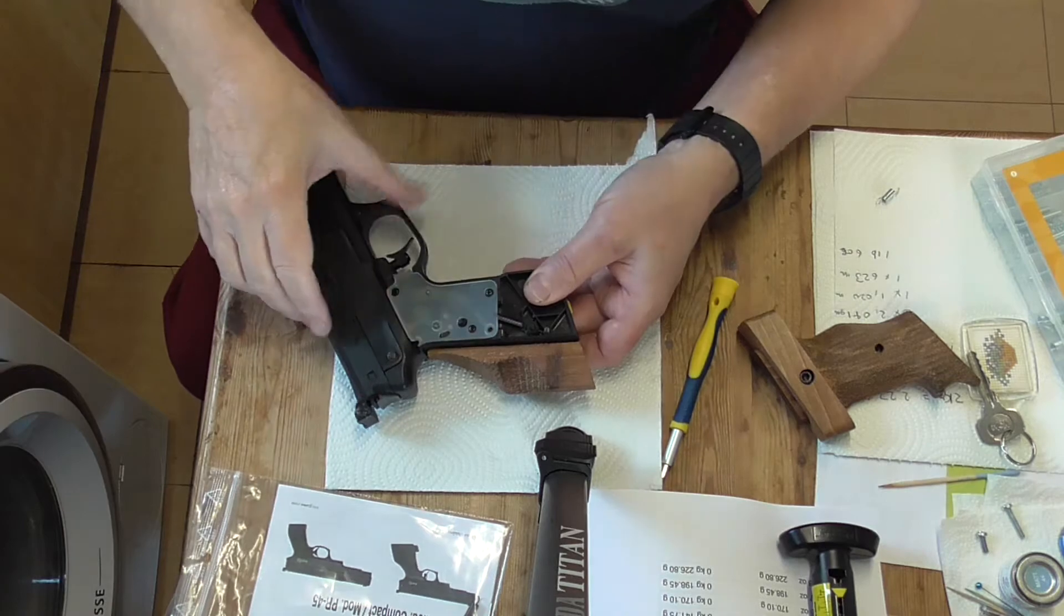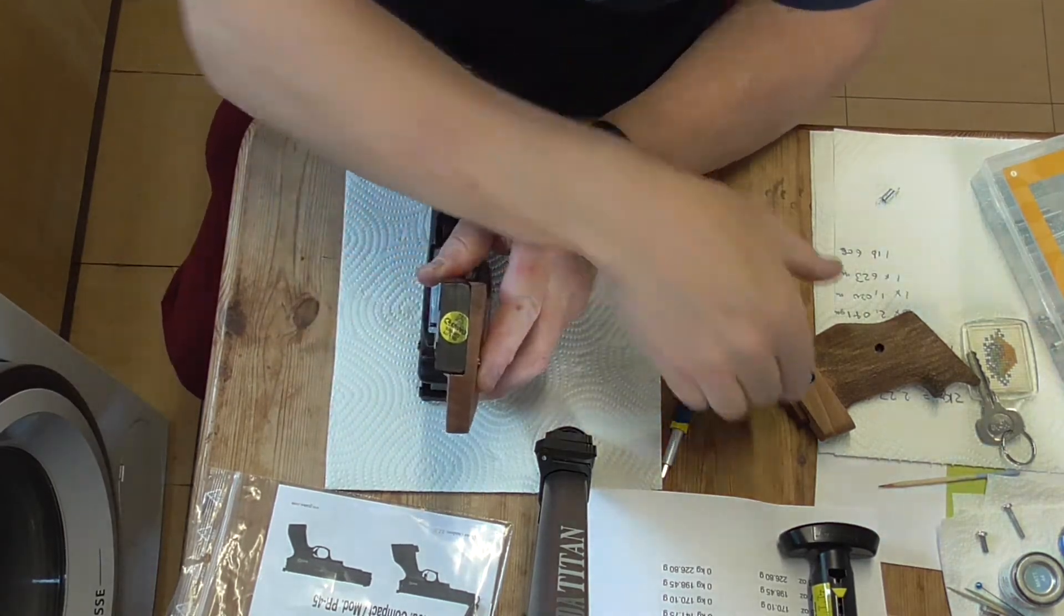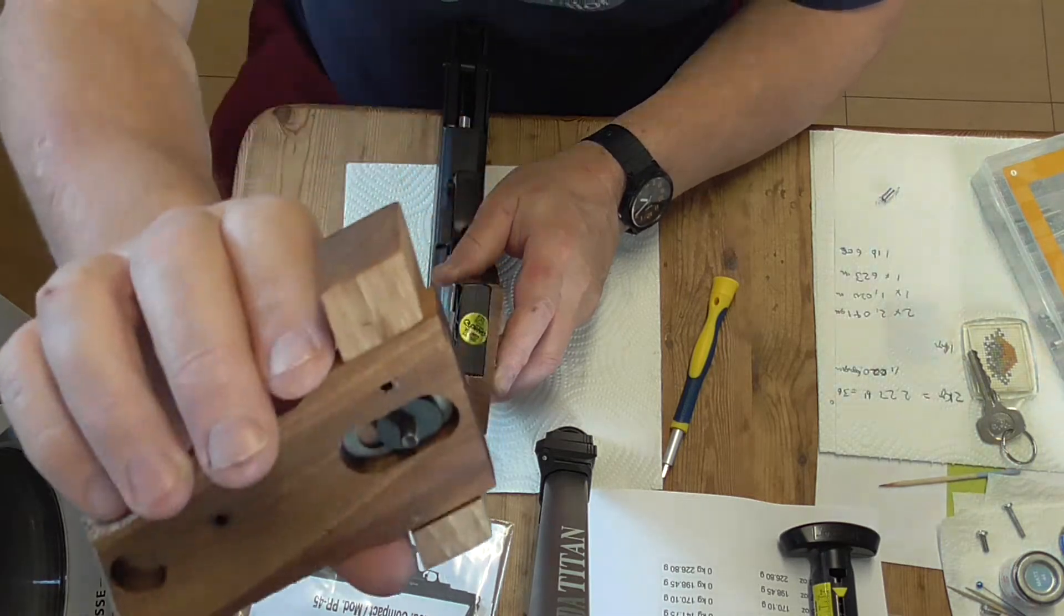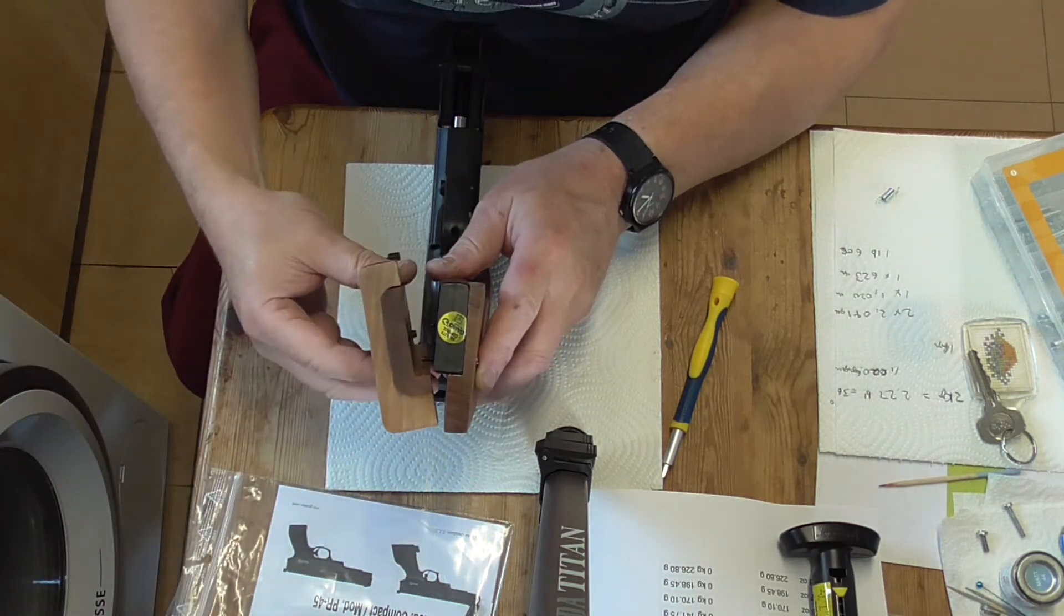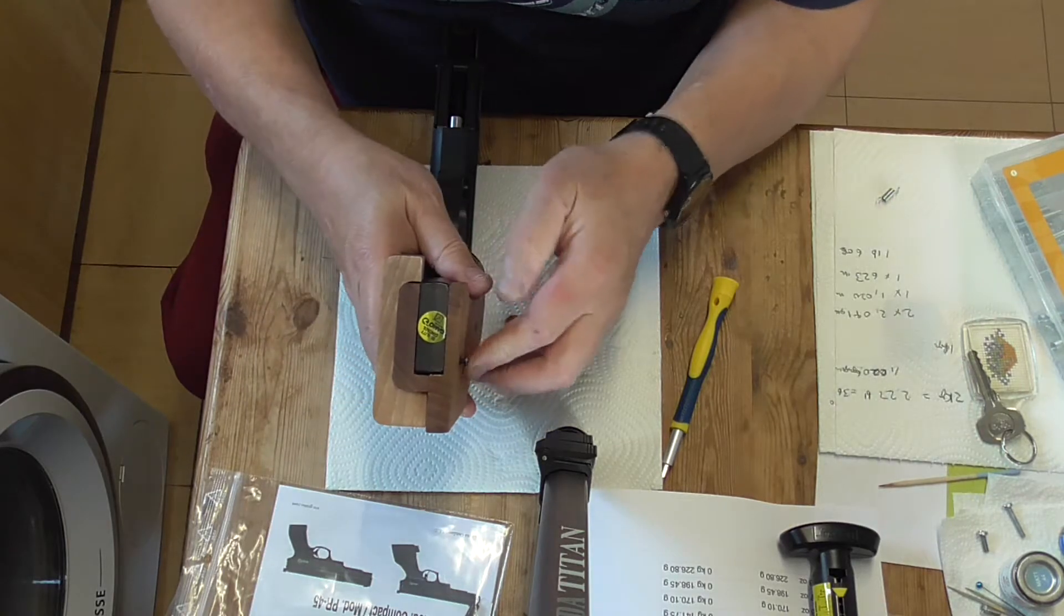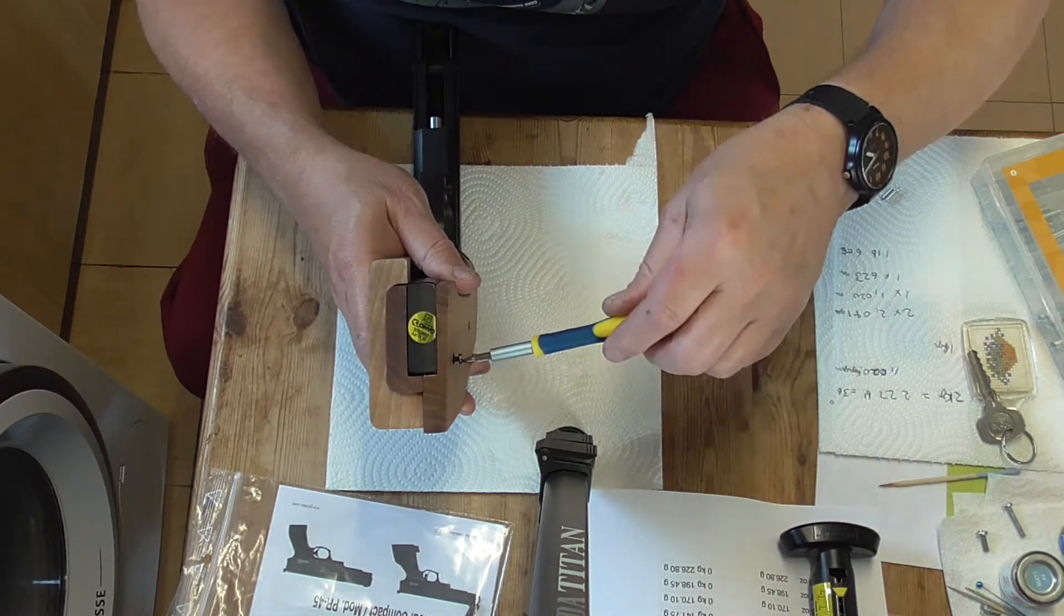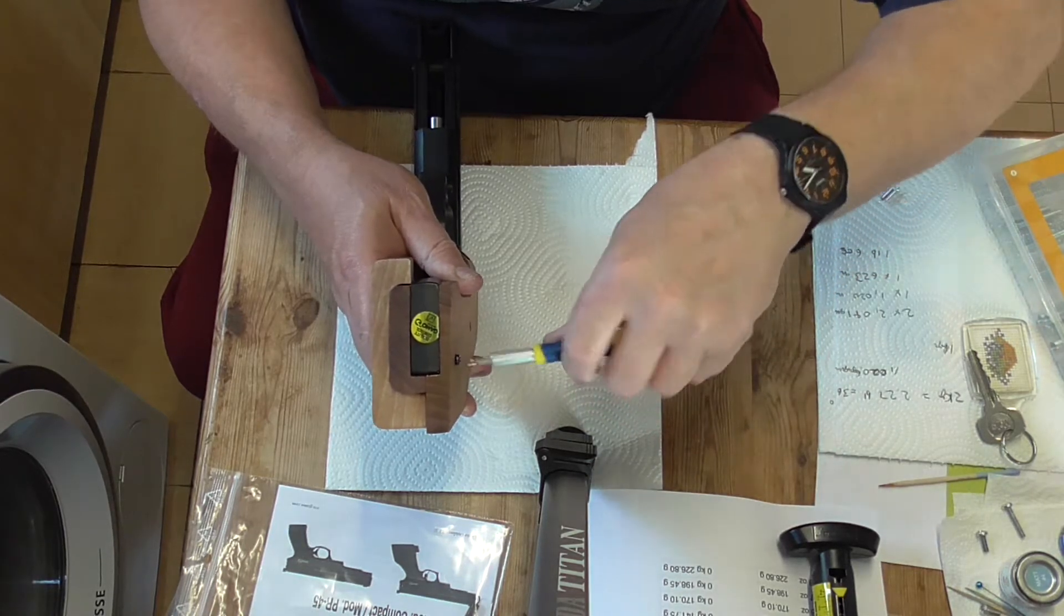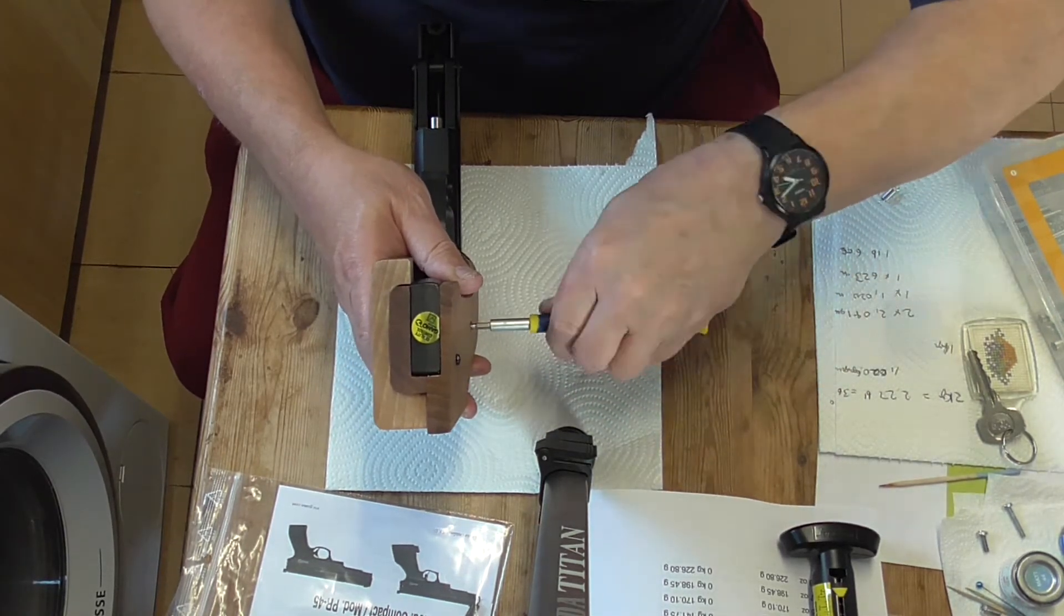So you put this in, and the easiest way I found was to line the other grip up, and line up the bottom pin first, because that goes into that bottom wood. Getting that engaged first makes it easier. Do that up a bit, so it engages with the thread, and then do the upper one.